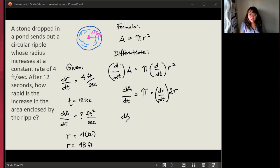And let's continue substituting. We're looking for dA over dt. Now we have pi times substitute. What's dr over dt? It's going to be 4 times 2. How about for r? It's 48. So dA over dt is going to be, let's multiply that. Pi times 4 times 2 times 48.